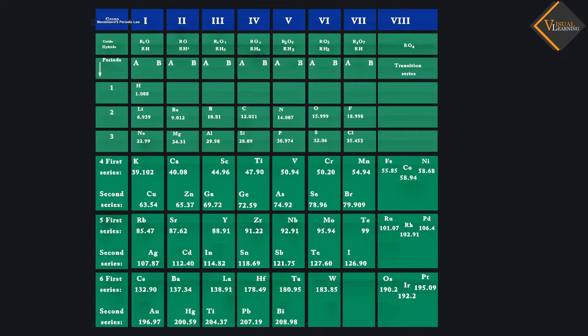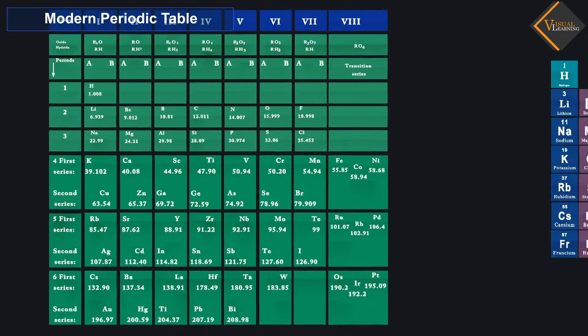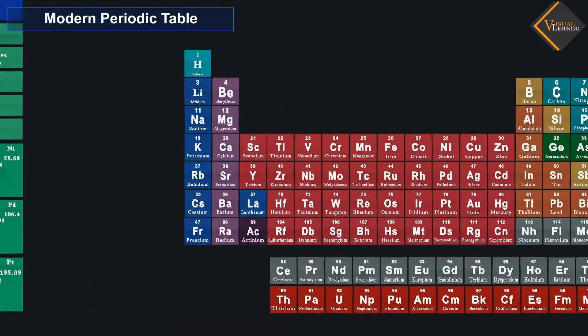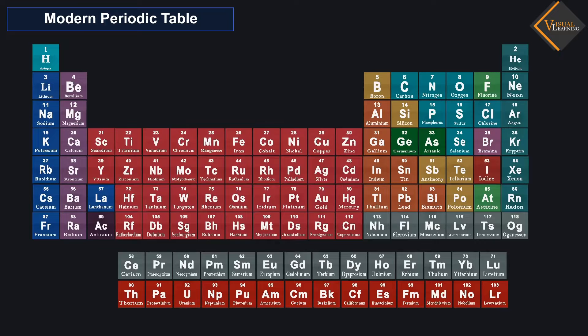Accordingly, Mendeleev's periodic law was modified and atomic number was adopted as the basis of the modern periodic table. The modern periodic law can be stated as follows: Properties of elements are a periodic function of their atomic number.